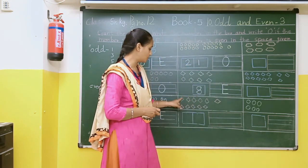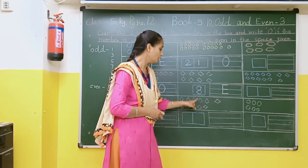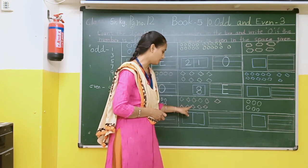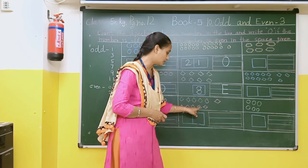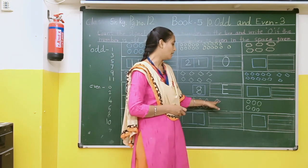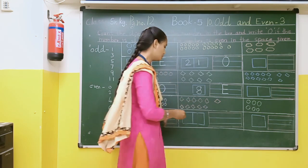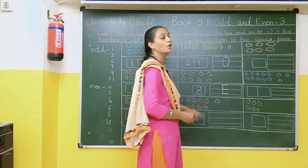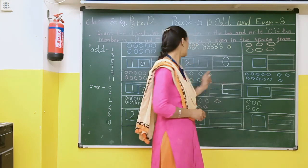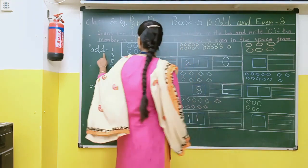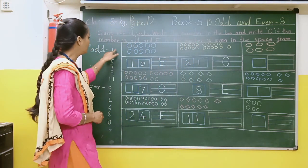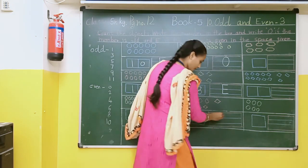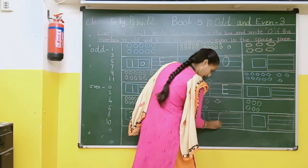Here we will count: 1, 2, 3, 4, 5, 6, 7, 8, 9, 10, 11. So here we will write 11. What is 11? 11 comes under odd number. There is a number 1 that comes under odd. So here we will write O.